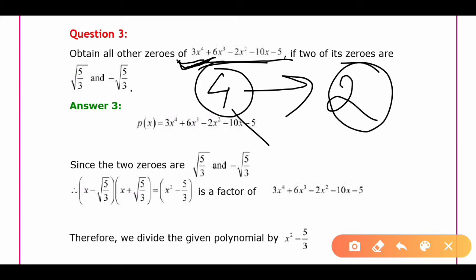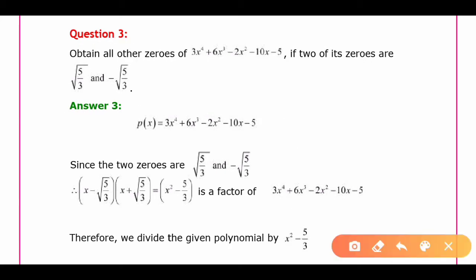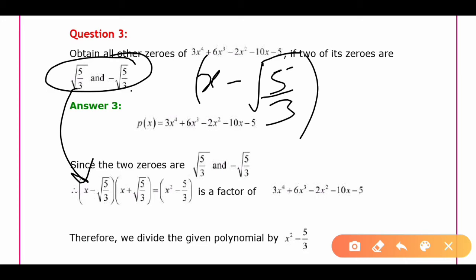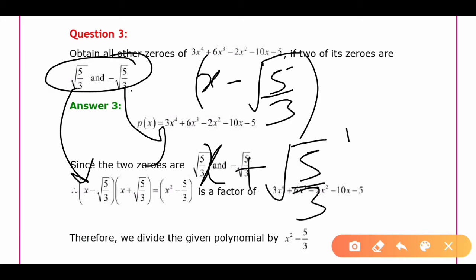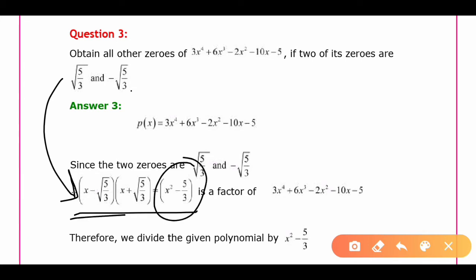We are denoting this polynomial by p(x). The given zeros are √(5/3) and -√(5/3). Using these solutions, we can write the corresponding factor g(x) as (x - √(5/3))(x + √(5/3)), which gives us x² - 5/3.